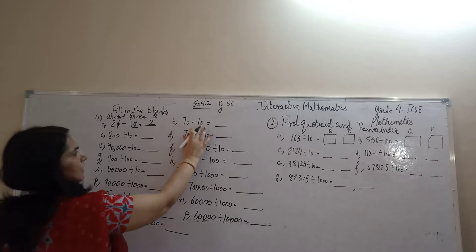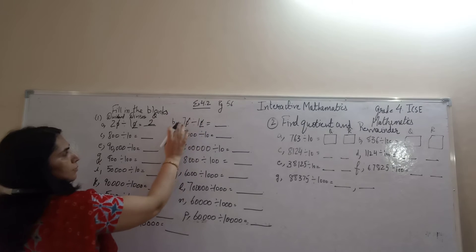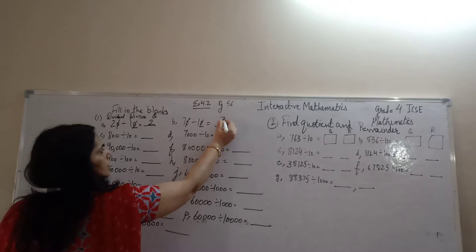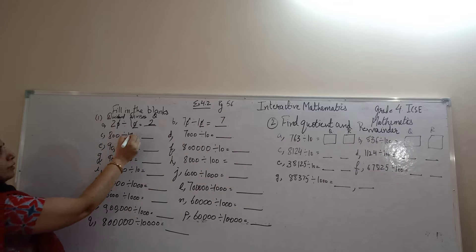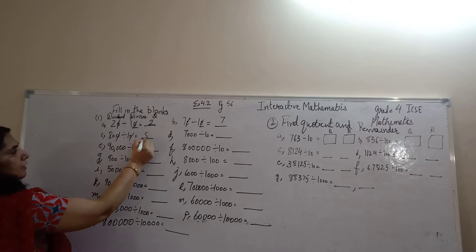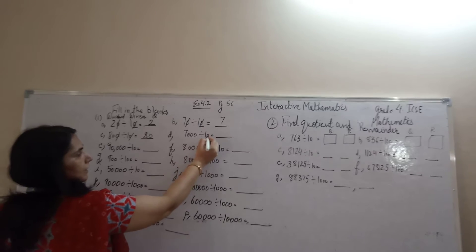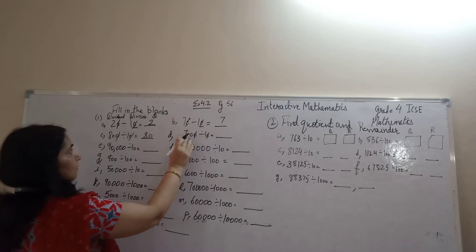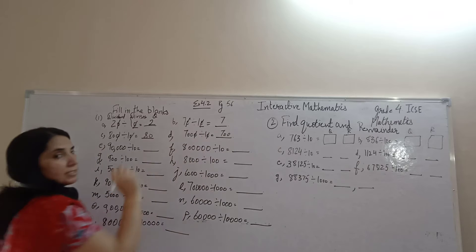70 divided by 10. It is having 1 zero. We will remove 1 zero from here. 7. 800 divided by 10. 10 removed from here. It is 80. 7000 divided by 10. 1, 0. 1, 0 removed from dividend. Answer is 700.